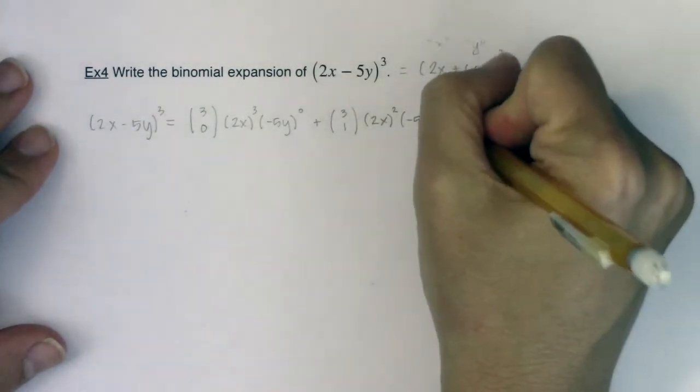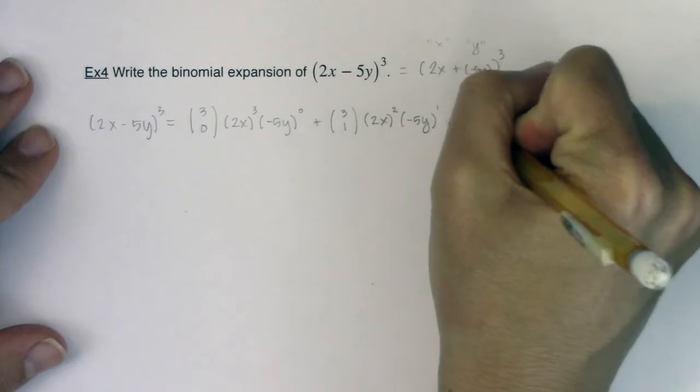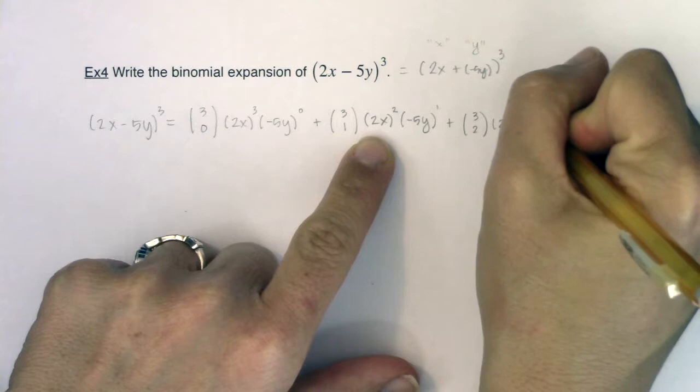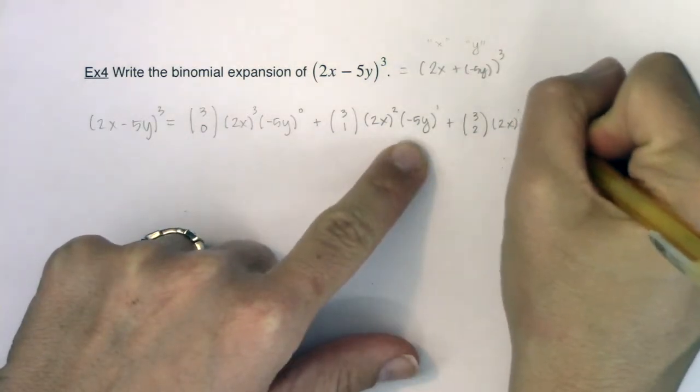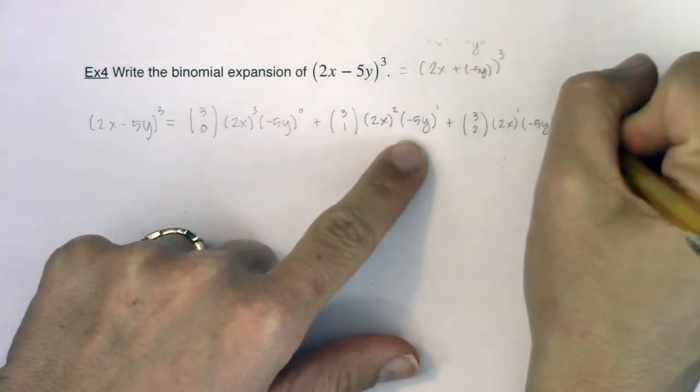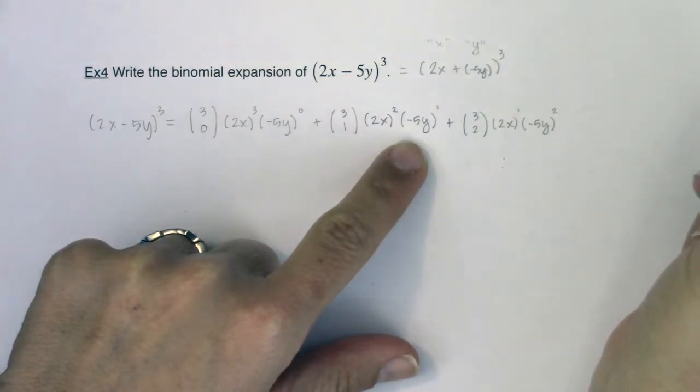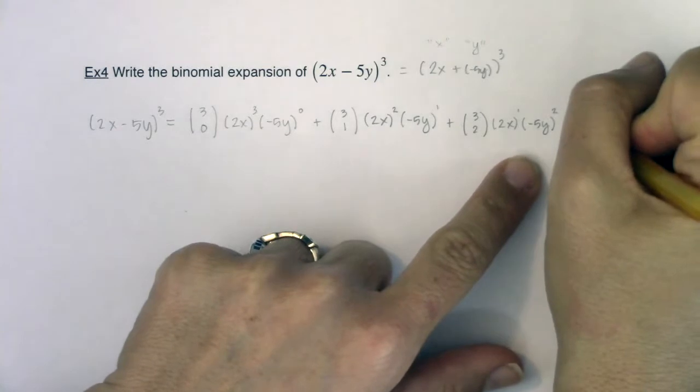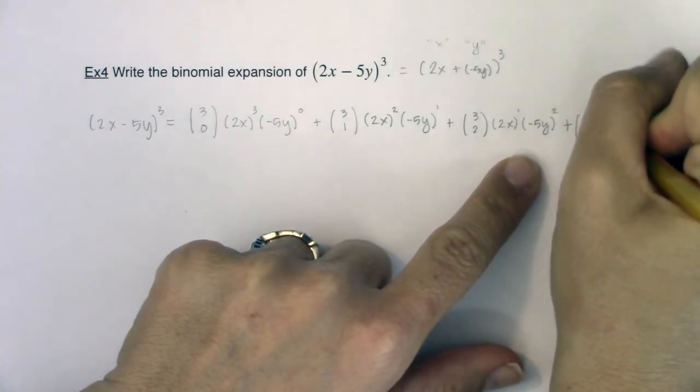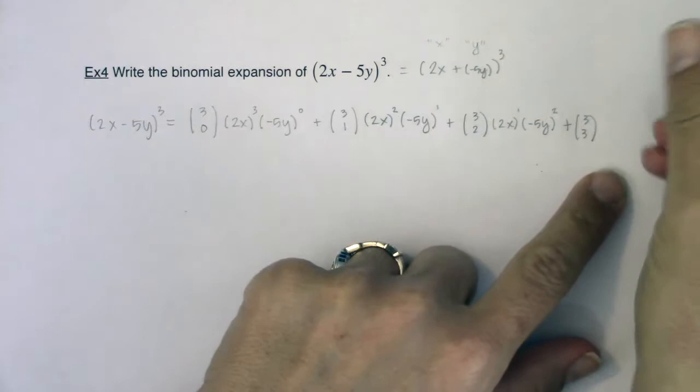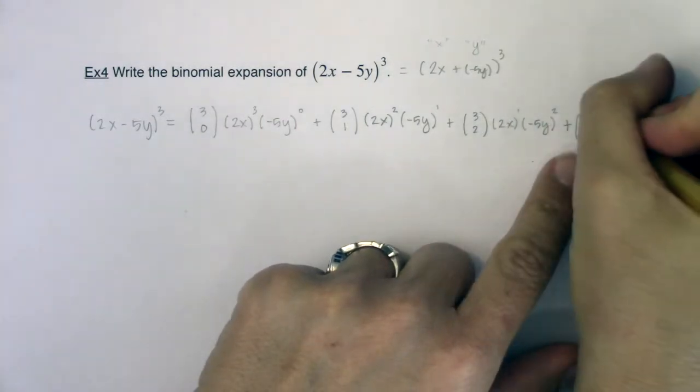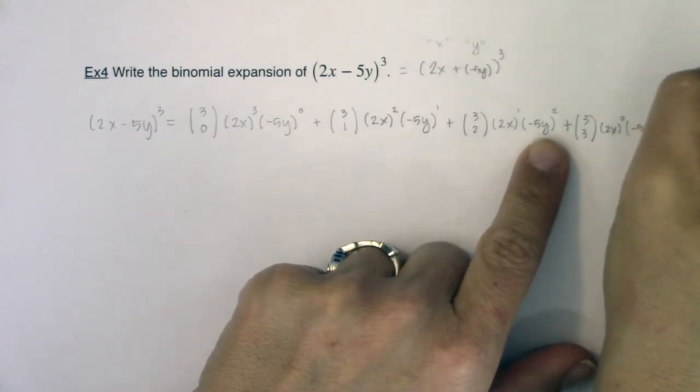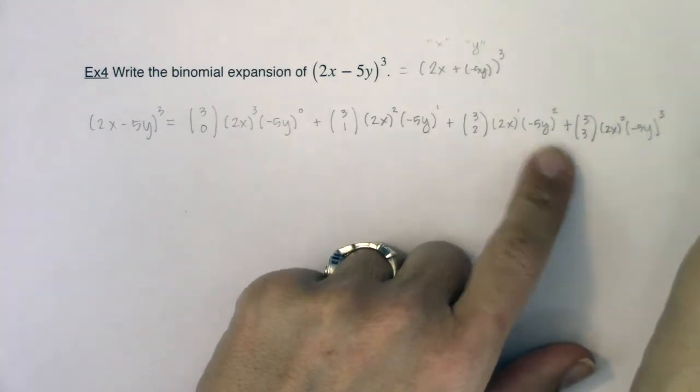Let's get to our next term. We're going to have 3 choose 2. The powers on 2x are going to descend, so we're going to have 2x raised to the first power. The power on negative 5y is going to ascend, so we're going to have negative 5y squared. Let's go ahead and add our last term in. We're going to have 3 choose 3, and when I do 3 choose 3, the power on 2x is going to descend to the 0 power, and the power on negative 5y is going to ascend to something cubed.